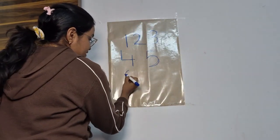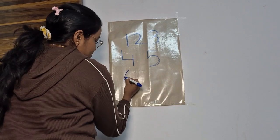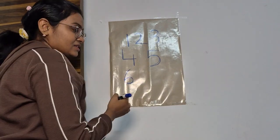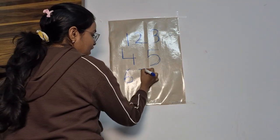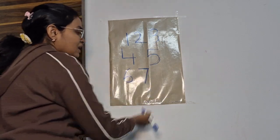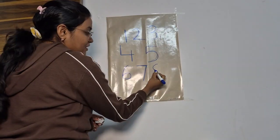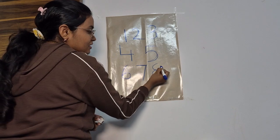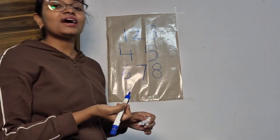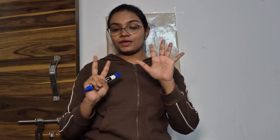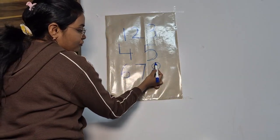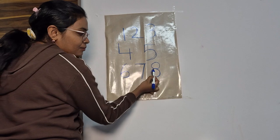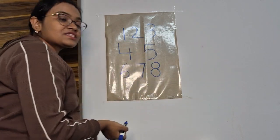Now slanting line, circle makes the number six. Sleeping line, slanting line makes the number seven. Half circle, half circle makes the number eight.